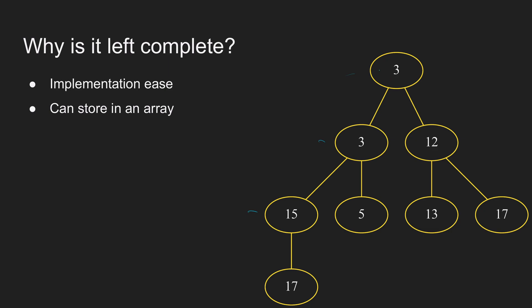If we number the nodes 1 through 7, from node 1 we can get to the left child by multiplying the node index by 2, and to the right child by multiplying by 2 and adding 1. For example, 2 × 2 = 4 (left child) and 2 × 2 + 1 = 5 (right child). To get to the parent from a node, we just divide by 2 and round down — so 4 ÷ 2 = 2, and 5 ÷ 2 (rounded down) = 2. That's very convenient for implementation.